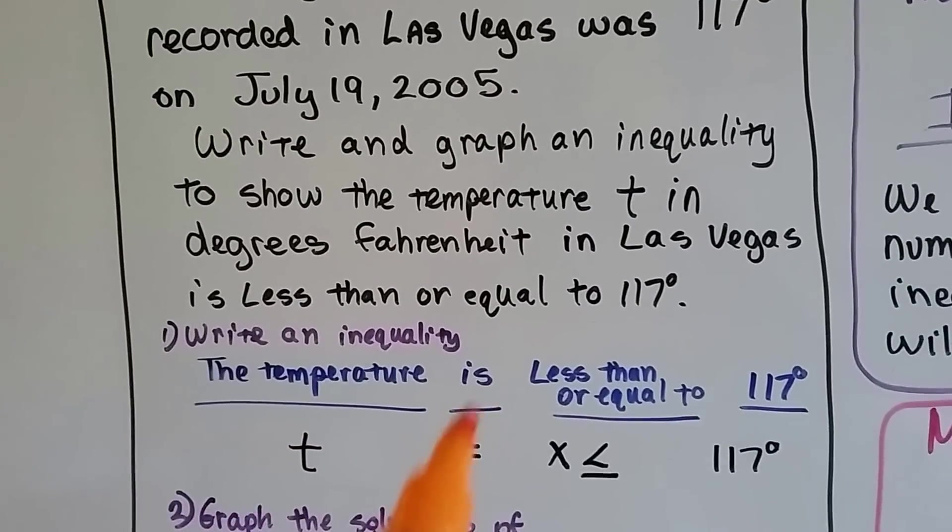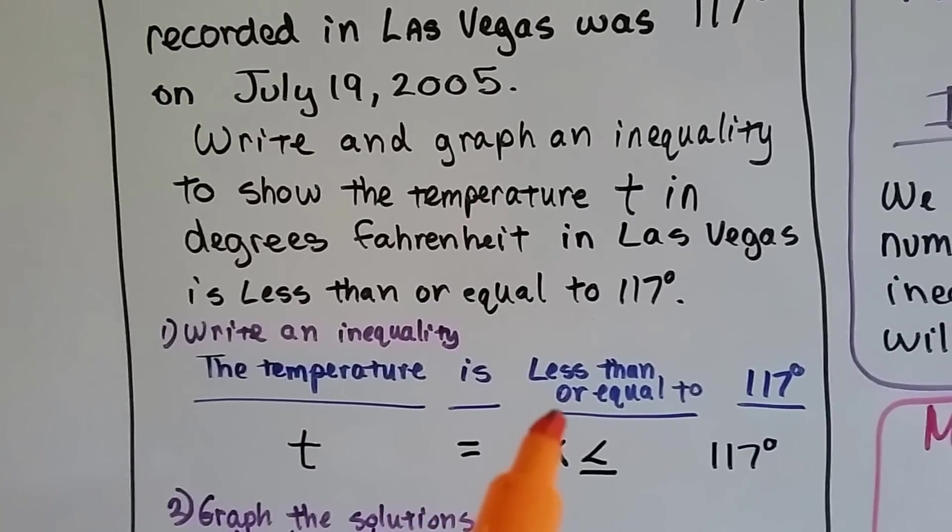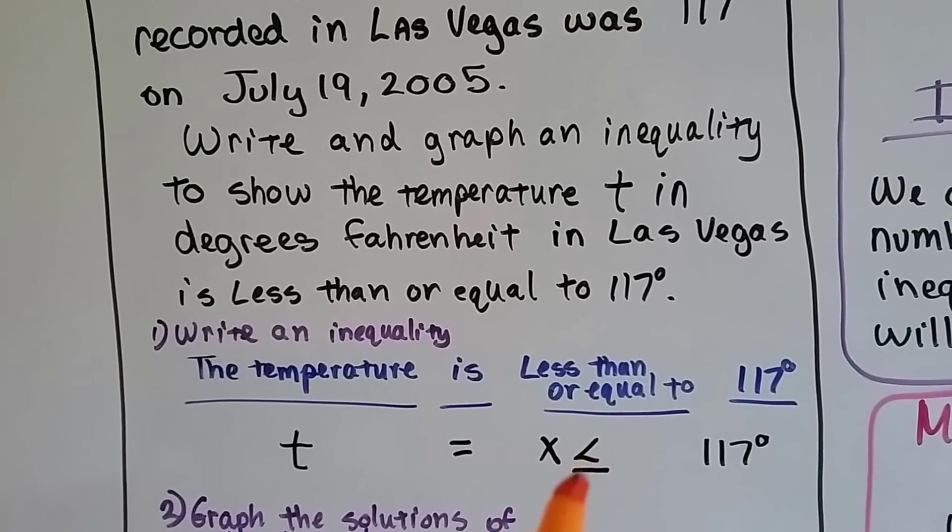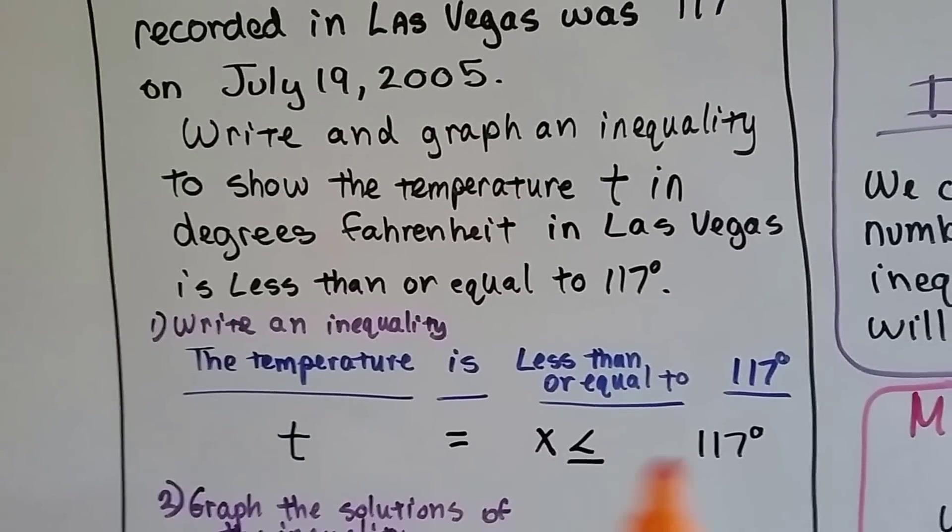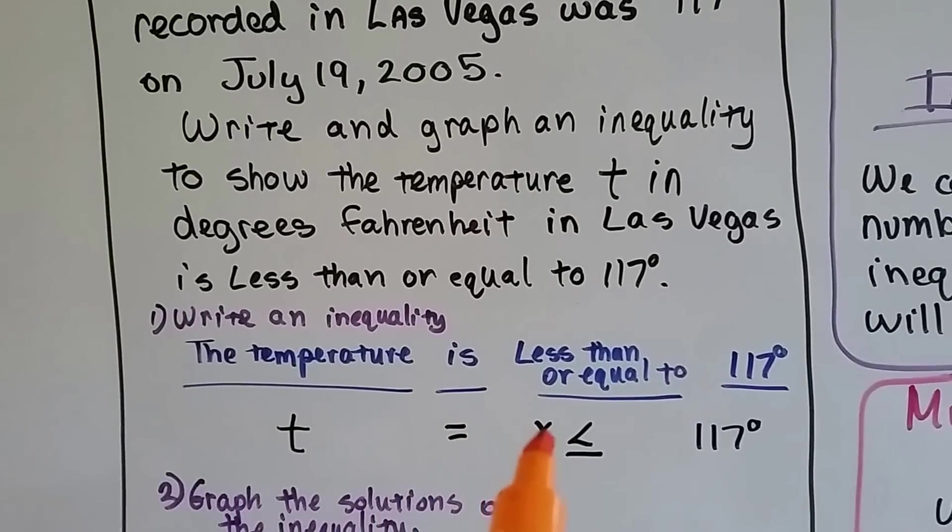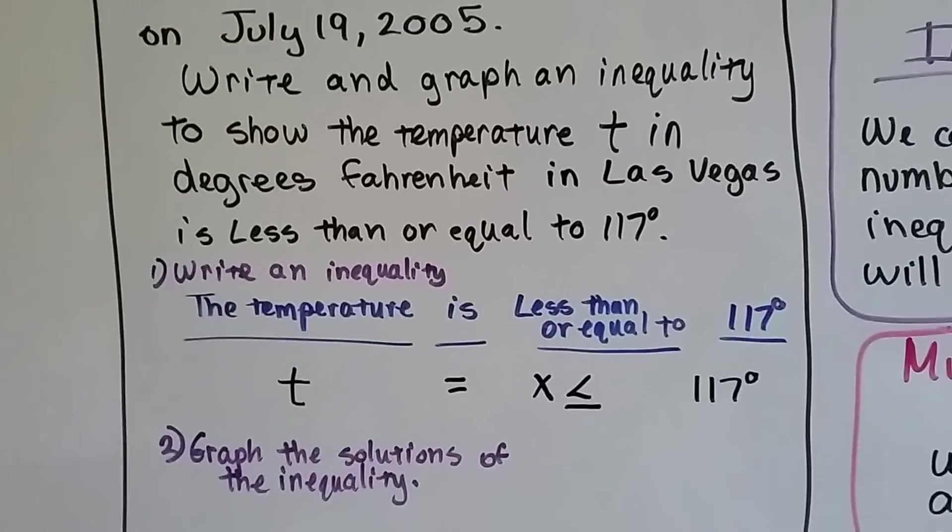The temperature T is, is the equal sign, less than or equal to, so we got x is less than or equal to 117 degrees. So there's our inequality. T equals x less than or equal to 117 degrees.